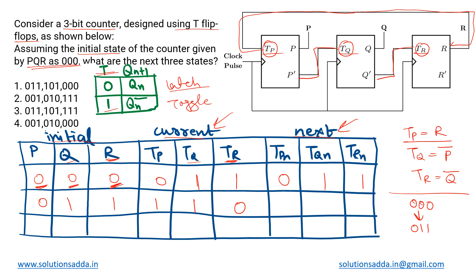Now determining the next state from 011: for TP next, input P is zero — latch mode — so TP(n) remains 1. For TQ next, Q is 1 — toggle mode — so TQ(n) is the complement of TQ which is 1, giving 0. For TR next, R is 1 — toggle mode — TR is 0 so TR(n) becomes 1. The next state from 011 is therefore 1, 0, 1.